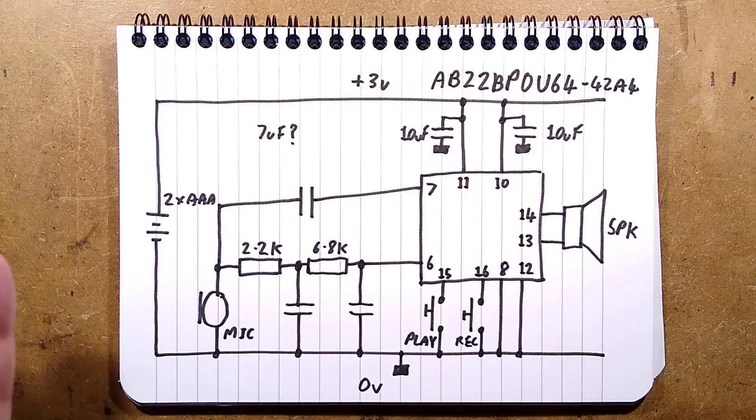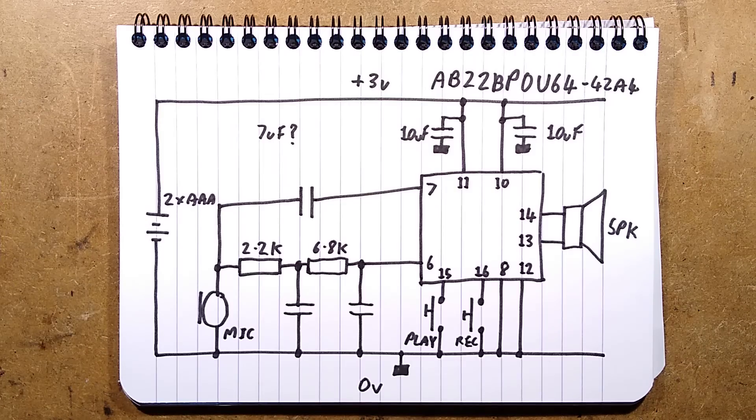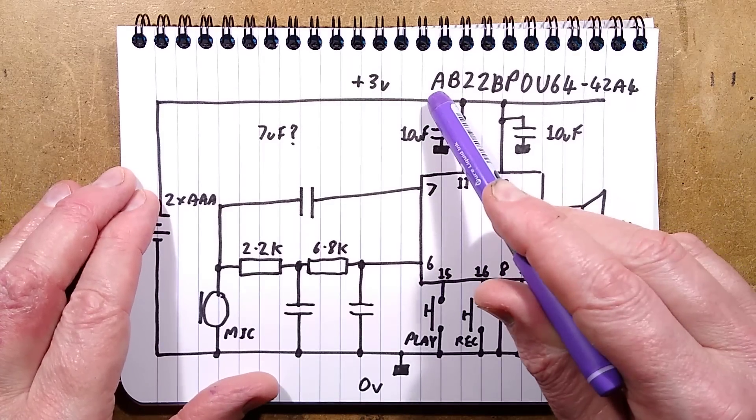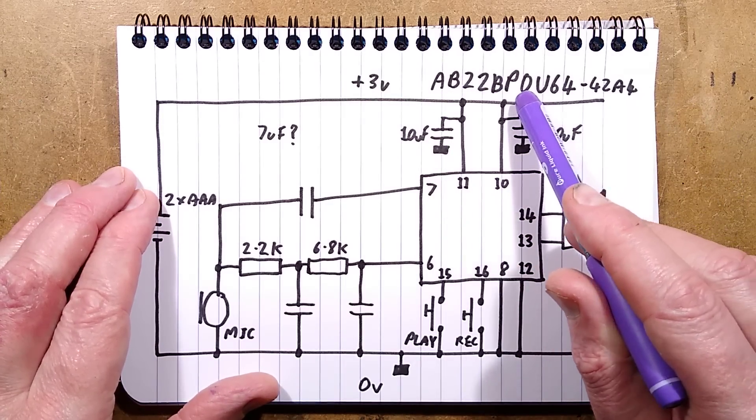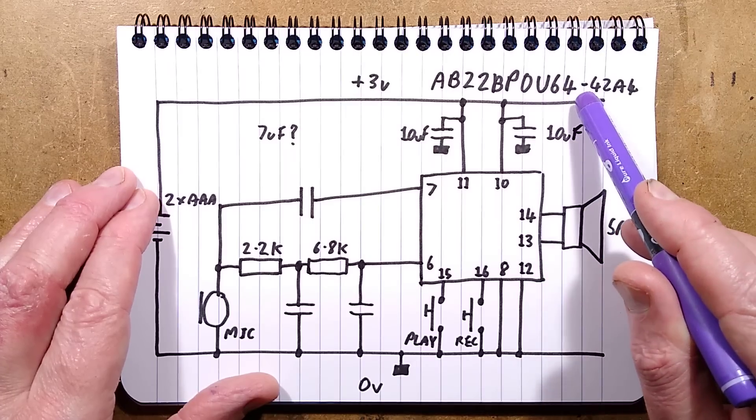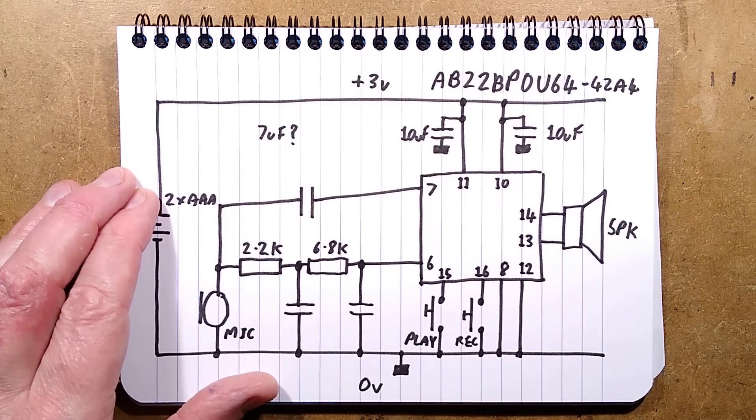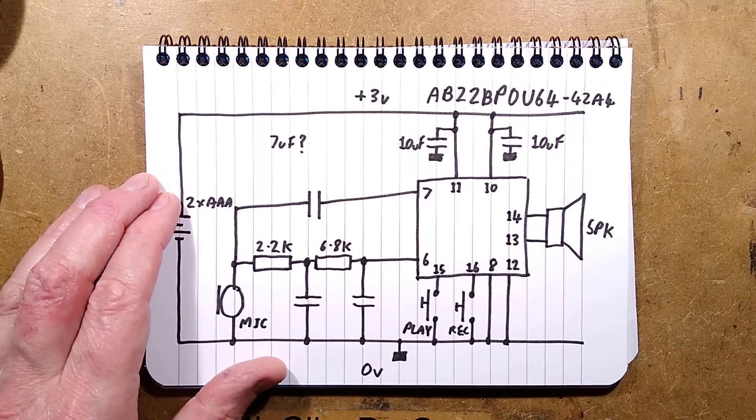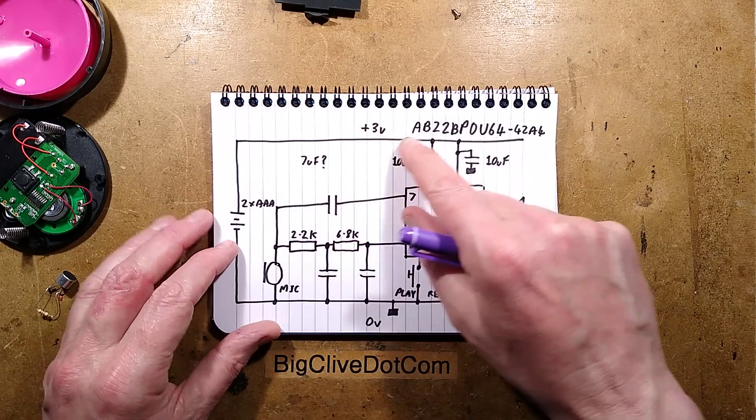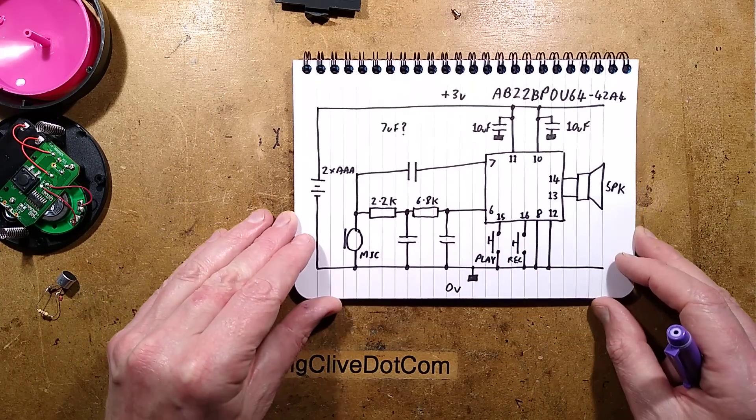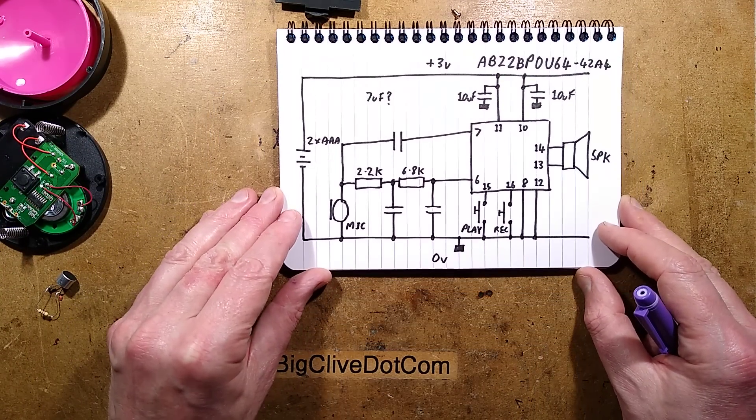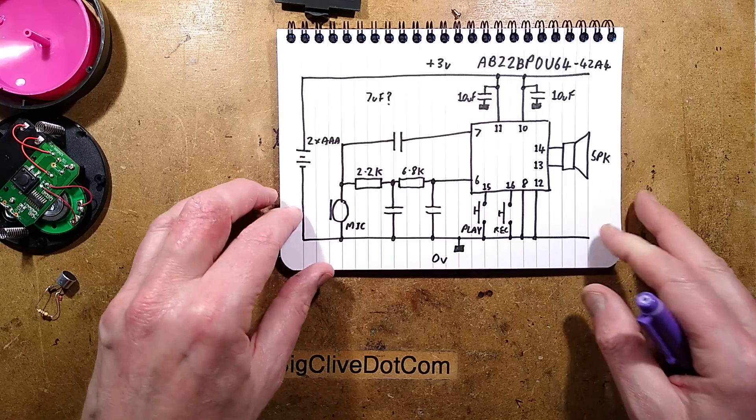That's it. Everything is done by the chip. It's a completely dedicated chip. The chip number is AB22BP and either zero or an O U64-42A4. I drew a blank. But that's what often happens with these. I am getting flashbacks to Bible Teddy, though, as being a similar sounding chip number. Possibly the same manufacturer. Maybe not.